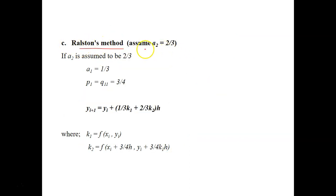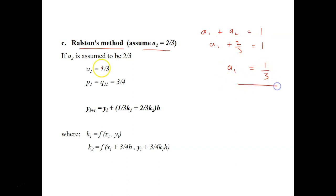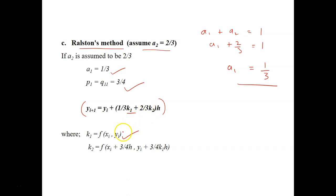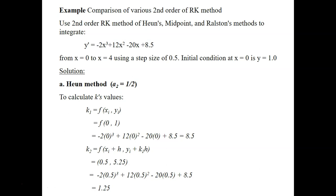Moving on to Ralston's method, we assume A2 = 2/3. From A1 + A2 = 1, we get A1 = 1/3. We then solve for P1 and q11 and reduce the general RK equation accordingly: k1 is the slope of the previous point (initial condition), and k2 is the slope for the updated point. This is Ralston's second order RK method.